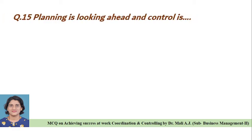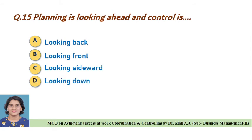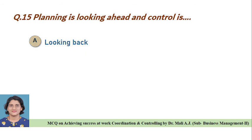Question fifteen: Planning is looking ahead and control is — Option A: looking back, Option B: looking front, Option C: looking sideward, Option D: looking down. Correct answer is Option A, planning is looking ahead and control is looking back.